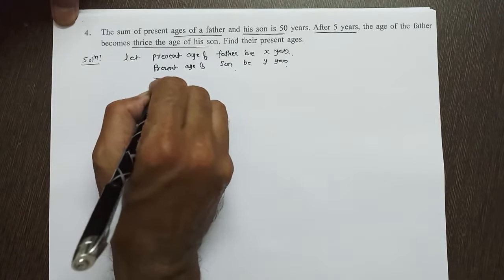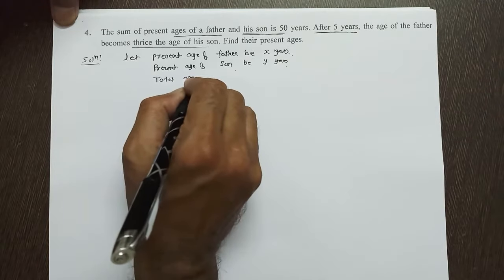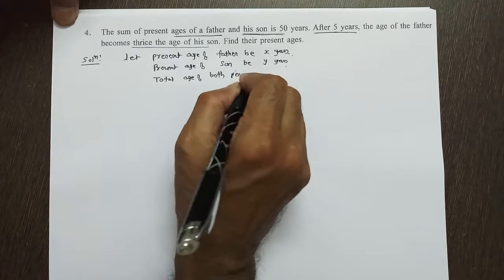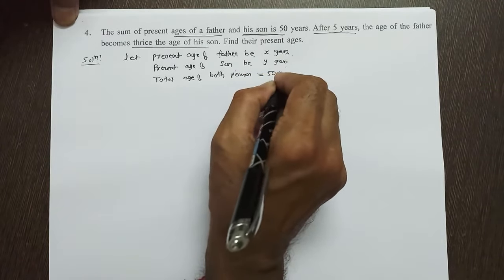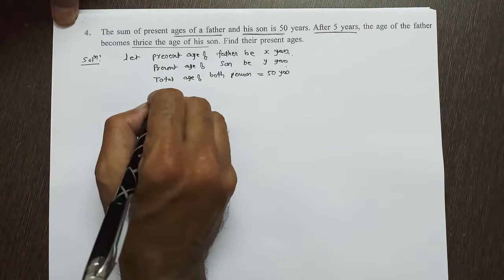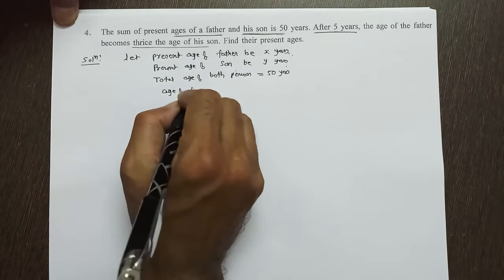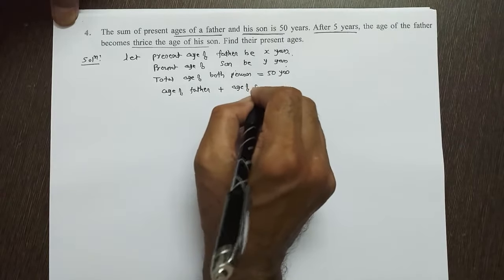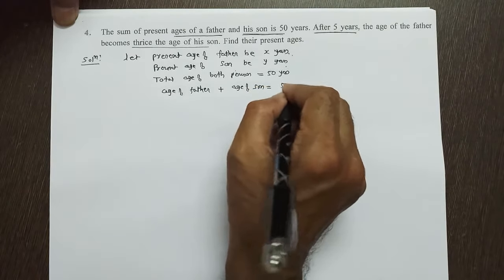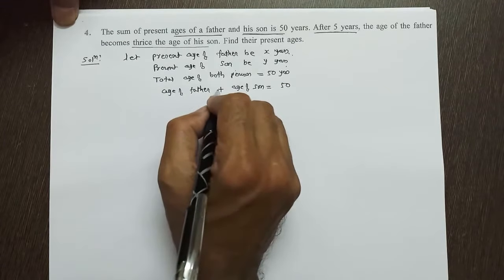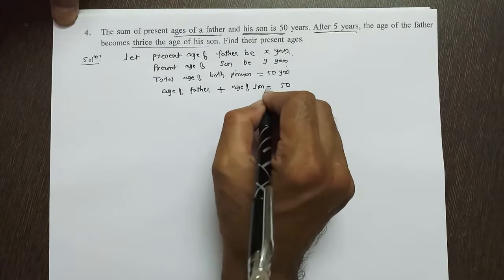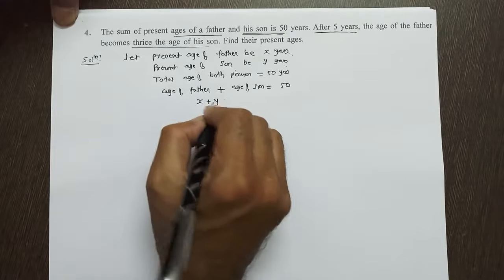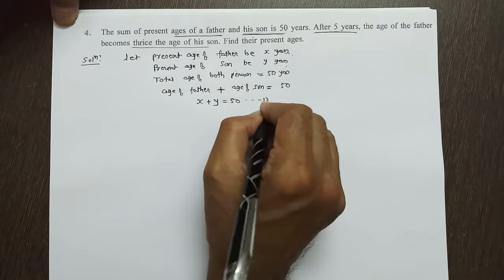The total age of both persons is equal to 50 years. This means age of father plus age of son is equal to 50. The present age of father and present age of son is 50 years. Therefore, X plus Y is equal to 50. Equation number one.